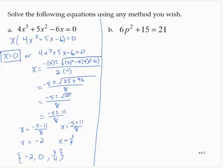Exercise b: 6p² + 15 = 21. In this one, I would not use the quadratic formula, because I do not see a linear term. All I have is the p² and constants. So here I'm going to use the square root property.